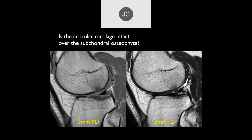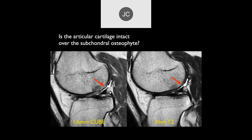Is the articular cartilage intact over the subchondral osteophyte? I don't think so — it's definitely overestimated on the PD compared to the T2. In my experience, if you go to thin-cut imaging, wherever you see subchondral osteophytes, I don't think I've ever seen intact hyaline articular cartilage overlying it. Subchondral osteophytes are a strong indication you're dealing with grade 3 to 4 full thickness defects. On the cube thin-cut, you can clearly see there's no hyaline cartilage overlying the subchondral osteophyte.